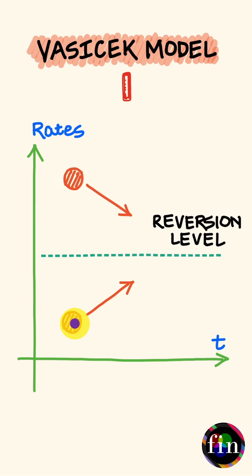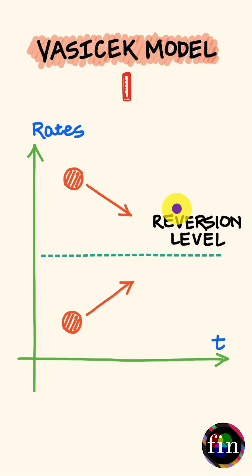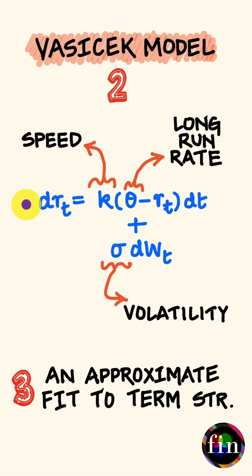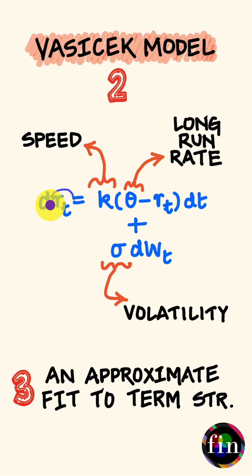If interest rates are too low, this will increase the demand for funds, and hence increase interest rates. To capture this behavior of mean reversion, this is the process which the Vasicek model proposes for the evolution of the short rate.